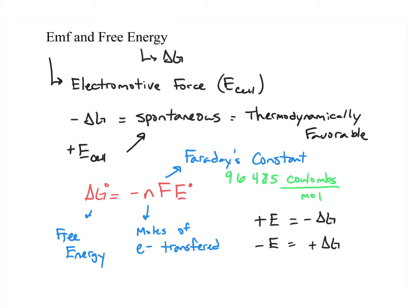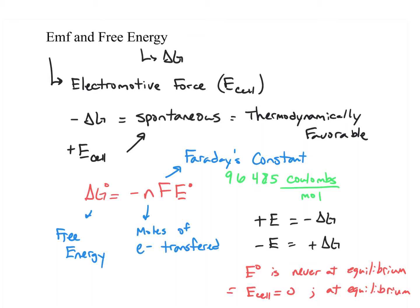Voltaic cells are never at equilibrium. When they start out, they're at standard conditions — one molar — and that is never going to be at equilibrium with the other half cell. So these are going to run spontaneously towards equilibrium. Once the cell potential reaches zero, then the reaction is at equilibrium. And if the cell potential is zero, according to this formula, then the free energy is also zero, which means the reaction is at equilibrium.